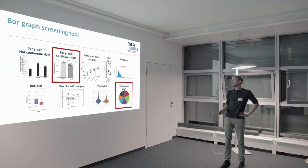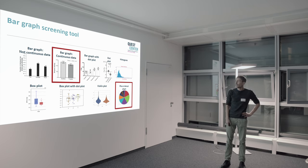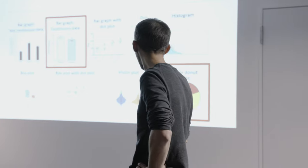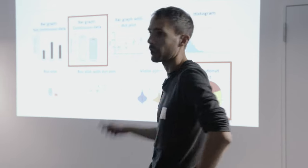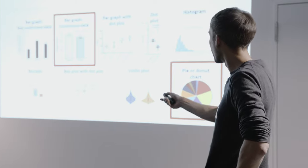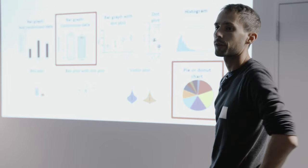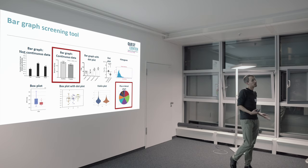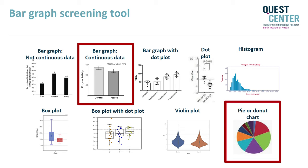It especially finds these bad guys, denoted in red: bar graphs for continuous data, and pie or donut charts. And it also finds more informative alternatives which you should use instead, like dot plots, histograms, box plots, and violin plots.